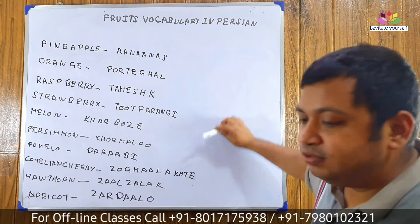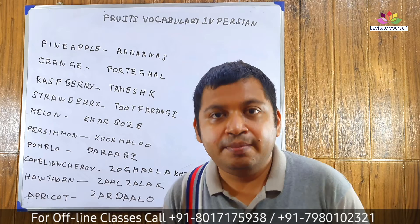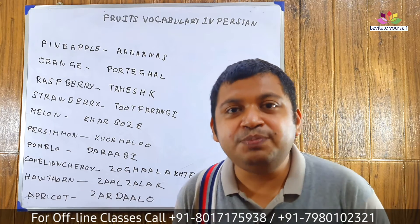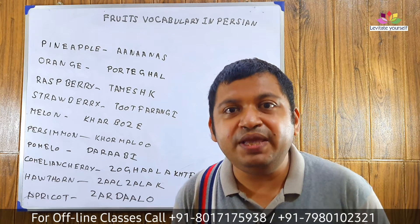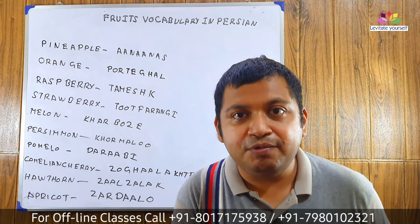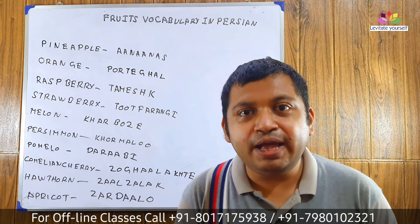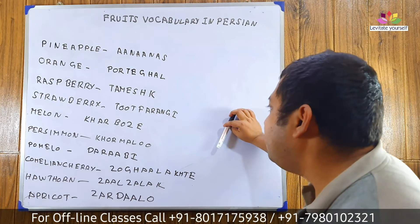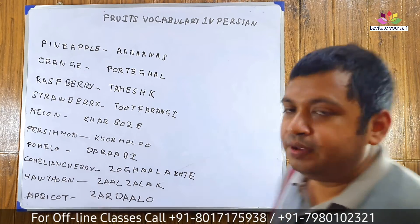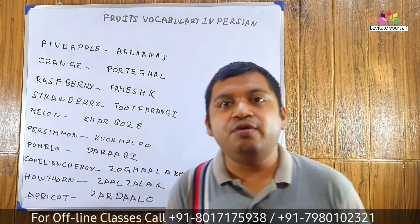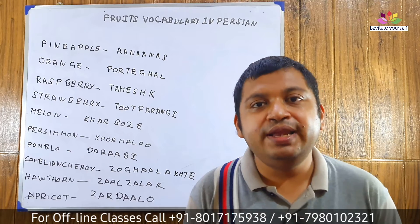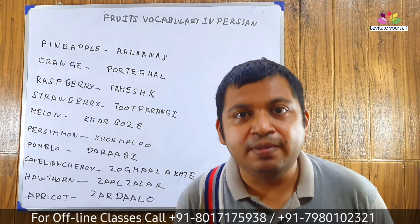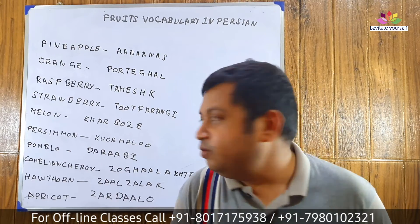Melon: Kharboozeh. Let's pronounce it with me: Kharboozeh. Come to the next word. Persimmon: Khormaloo. Let's pronounce it with me: Khormaloo.